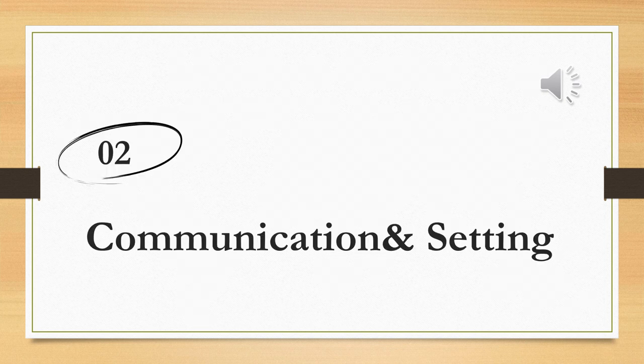Moving on to the second important part: communication and setting. Communication refers to the exchange of information, ideas, emotions, and thoughts between individuals or groups. The setting itself plays a crucial role in influencing how characters communicate and interact with each other. The cultural norms, expectations, and physical surroundings of a particular setting can impact the way characters express themselves verbally, non-verbally, and even through their actions.